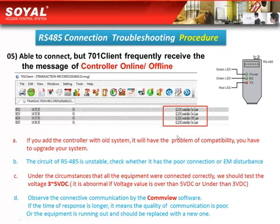In this situation, you can see the status sometimes shows online and sometimes shows offline. At this time, there are four possible reasons. First, if you have added a controller with an old system, the system may be too old and there will be a compatibility problem — you will need to upgrade your system. Second, the RS485 circuit is unstable; for example, there may be a poor connection or electromagnetic disturbance.